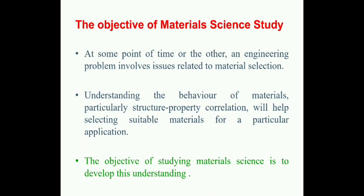Structure-property relationship is the main important thing that material science deals with. A particular material's structure leads to the property of that material. Structure here means not only the outer structure we see, but also the microscopic structure we can see under a microscope, starting from the arrangement of atoms, molecules, etc. So if you know the structure-property relationship, you will be able to select a suitable material for a particular application.